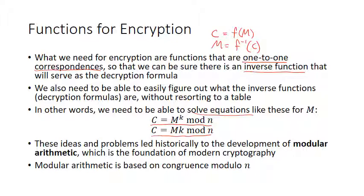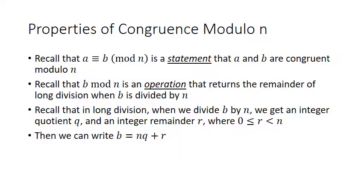We're going to talk about different theorems and things, because modular arithmetic is based on congruence modulo n. First we're going to review the concept of congruence modulo n a little more deeply. When you use the notation with the triple bar and mod n in parentheses, that is a statement that a and b are congruent modulo n.